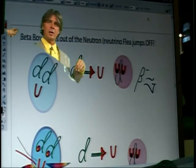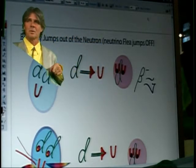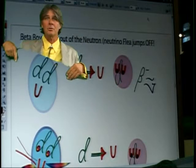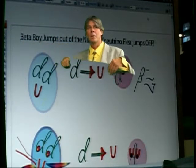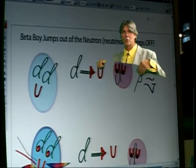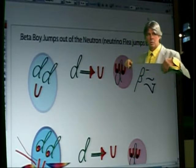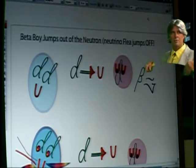Two downs and an up is a neutron. Neutron decays by a down quark turning into an up quark, which now makes it into a proton with a beta particle and the anti-neutrino.